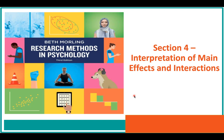Hi everyone, and welcome back to Psych 3530. Today we'll be going over Section 4 of our Factorial ANOVA lecture. Section 4 is all about practicing our interpretations of main effects and interactions, typically using a line graph. We'll really focus on interactions in particular and talk about the different types — the shapes or looks that an interaction can have, and what they mean and how they might slightly change our interpretation of those interactions.